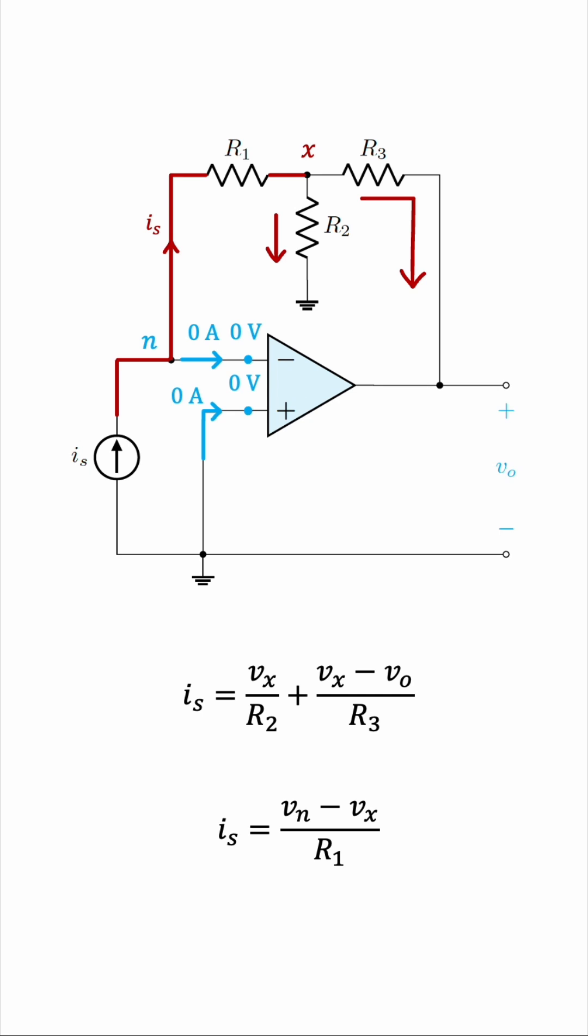But remember, and we have it labeled, Vn is 0, so IS is just negative Vx over R1.